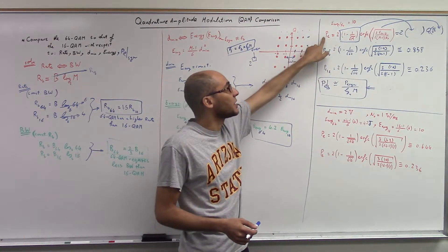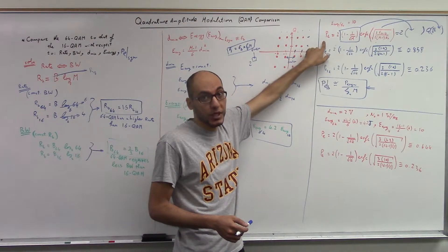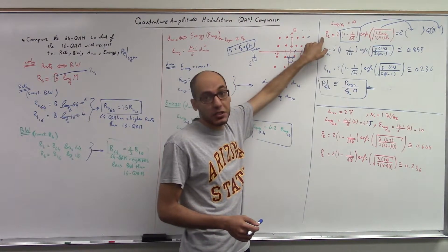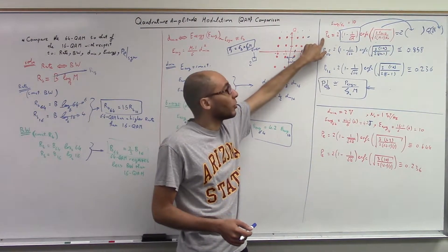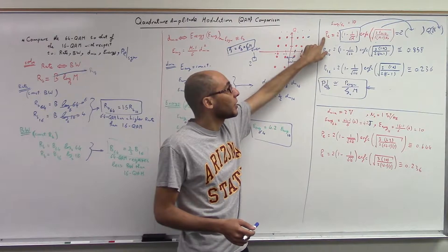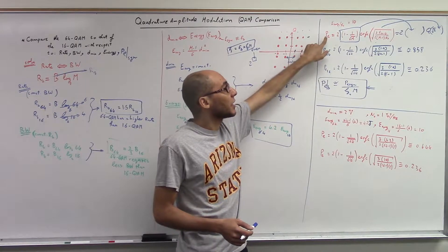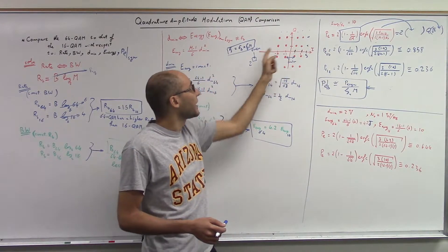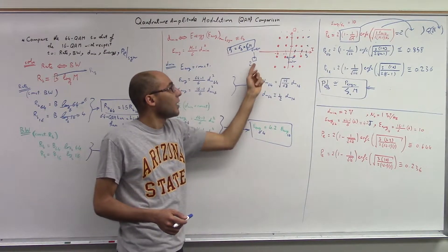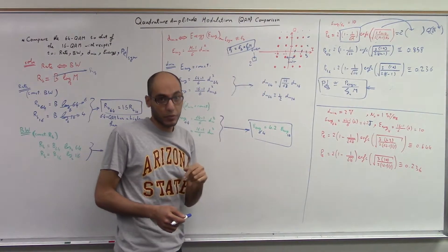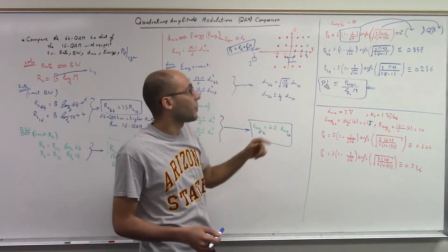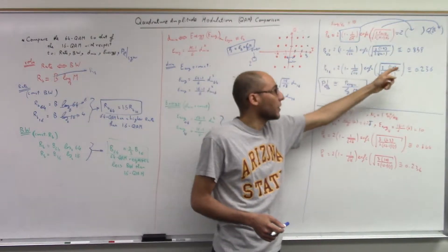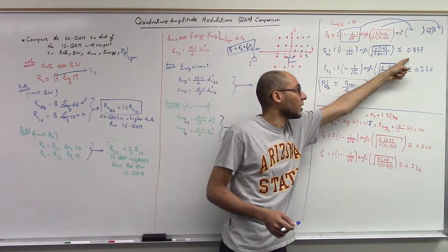This formula gives the probability of symbol error, not the probability of bit error. Also, this formula can only be used for QAM with an even power of the constellation size. If you use it for an odd power, you might end up with a probability of error greater than 1.